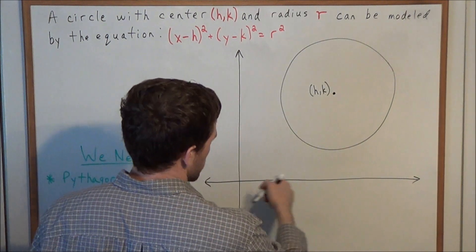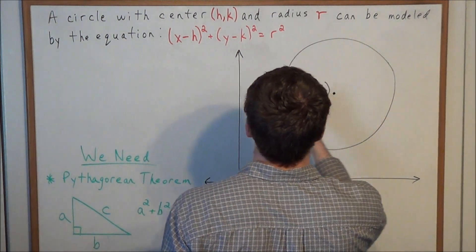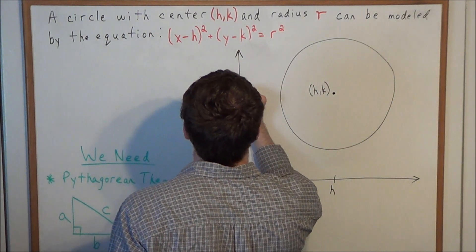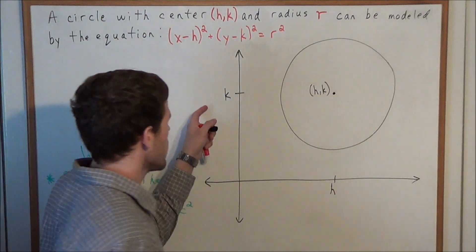Well first we travel a horizontal distance of h and then we travel a vertical distance of k. So we can mark off h on the x-axis and we can mark off k on the y-axis.